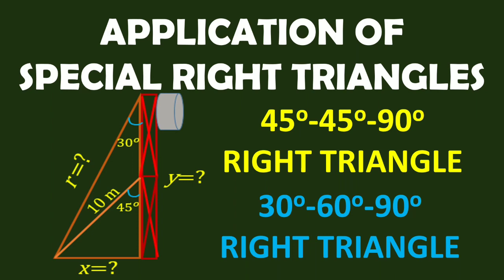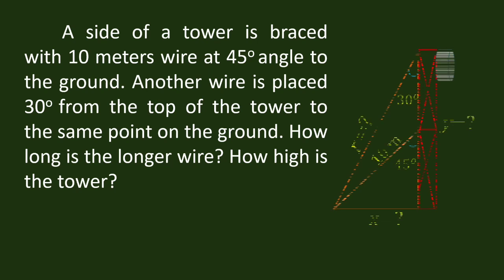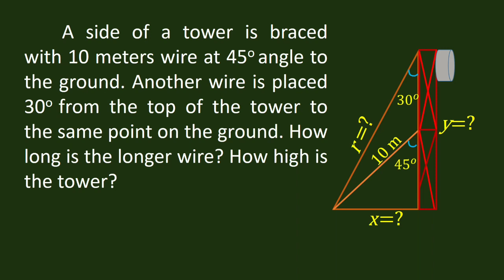For example, a side of a tower is braced with a 10-meter wire at a 45-degree angle to the ground. Another wire is placed 30 degrees from the top of the tower to the same point on the ground. How long is the longer wire? How high is the tower? At the right side is the illustration of the problem. We have a tower, braced with a 10-meter wire with an angle of 45 degrees. We want to find the hypotenuse R, or the longer wire, attached to the ground from the top of the tower.